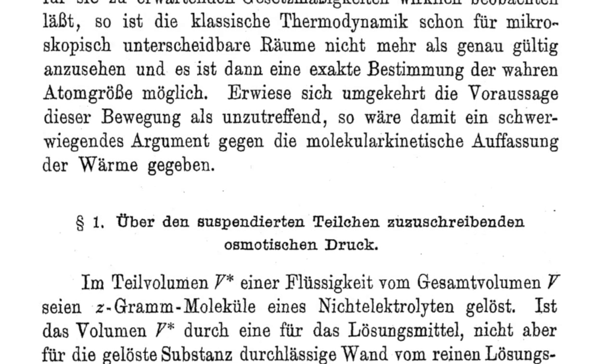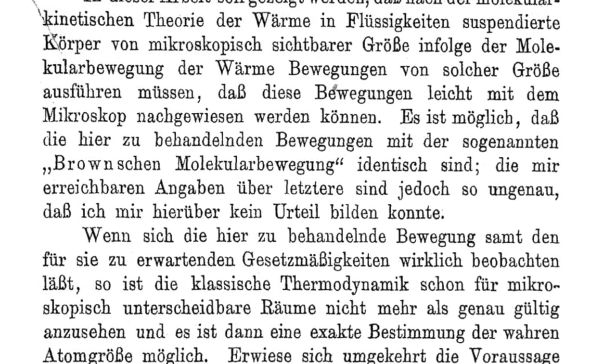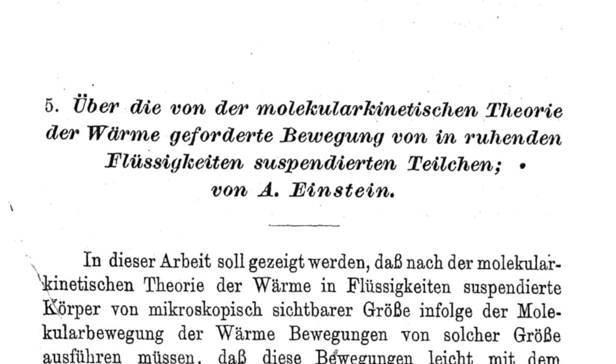And this has been a huge puzzle for quite some decades. And the final answer could then be given by Albert Einstein in 1905, interesting in the same year when he also published a theory about special relativity. And in that very year he also published a seminal paper about Brownian motion. And what he could show is that Brownian motion is one proof or manifestation of the existence of atoms.